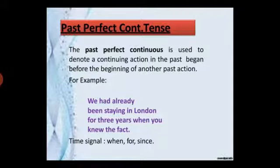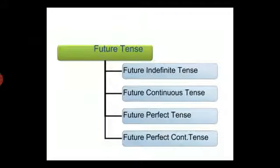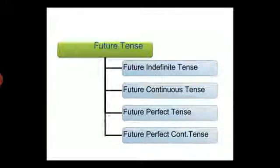Now let's know about future tense. Like all other tenses, future tense also has four types: future indefinite or simple, future continuous, future perfect, and future perfect continuous tense.